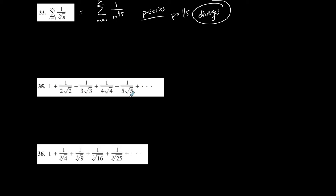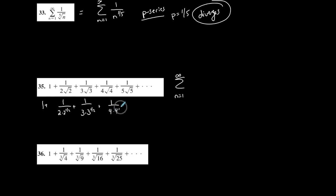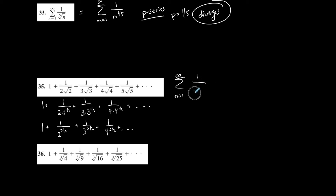This one is not represented in summation form, so I'm going to write it out first. Writing it from 1 to infinity: 1 plus 1 over 2 times 2 to the 1/2 plus 1 over 3 times 3 to the 1/2 plus 1 over 4 times 4 to the 1/2, and so on. When I multiply two terms with the same base I add the exponents, and 1 plus 1/2 is 3/2. So it becomes 1 over 2 to the 3/2 plus 1 over 3 to the 3/2 plus 1 over 4 to the 3/2, and you see the pattern — it's 1 over n to the 3/2.